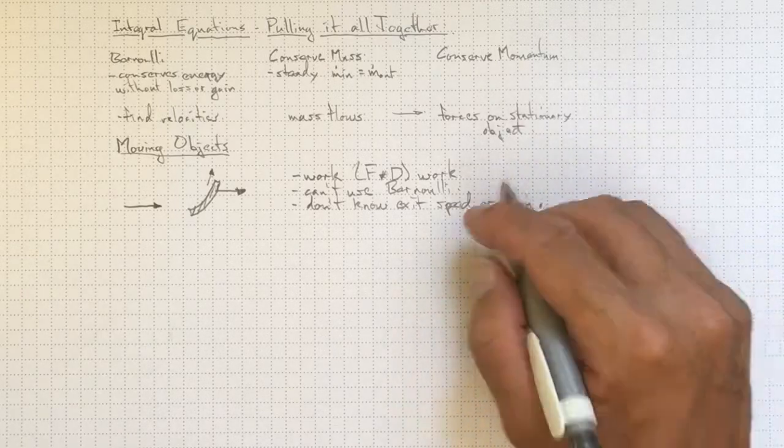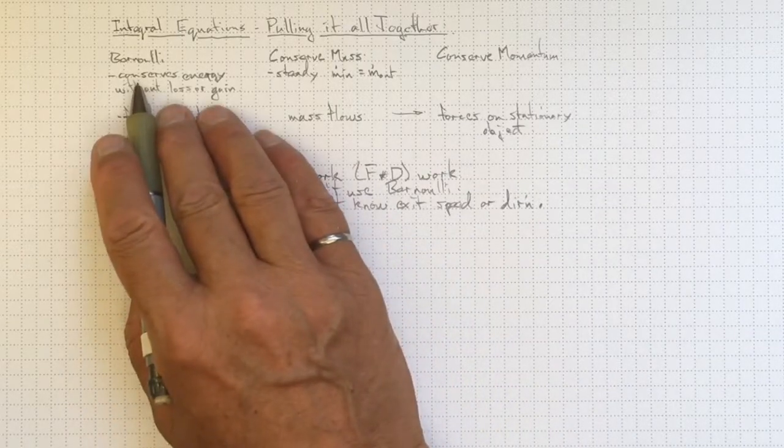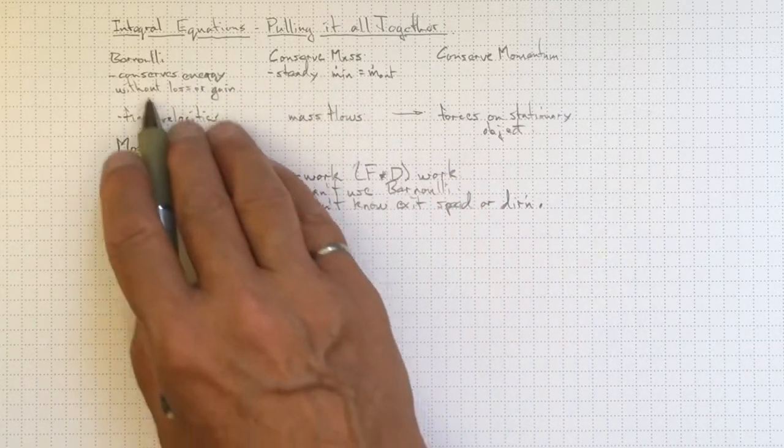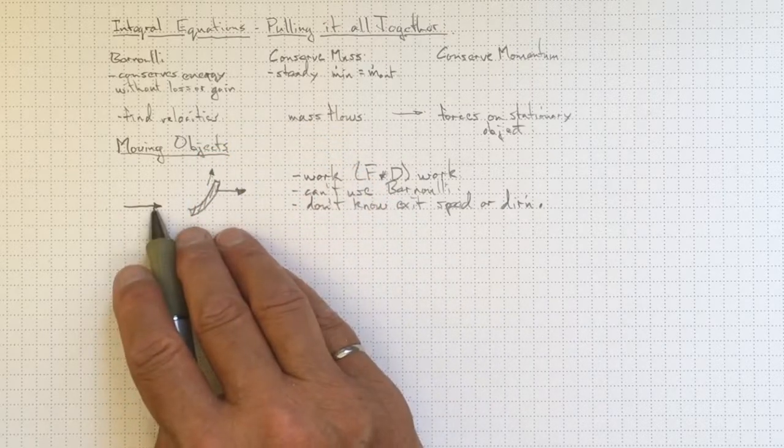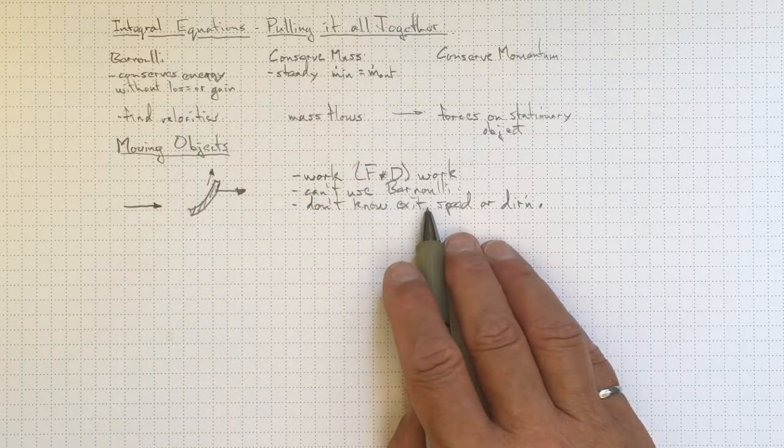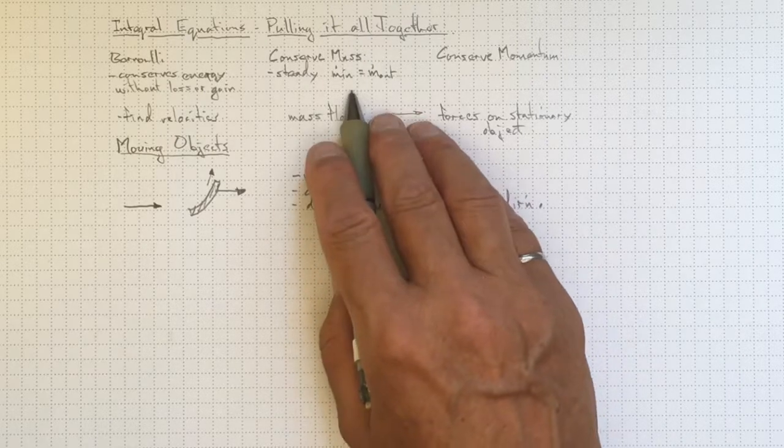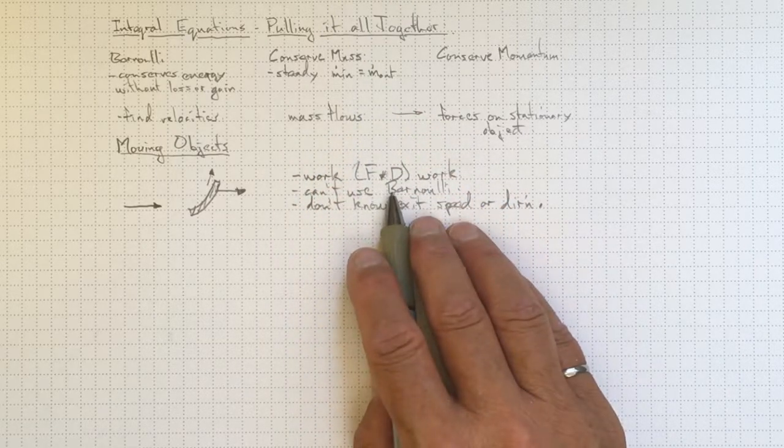So what can we do about that? We've got a system up here that allows us to work with situations where there's no loss or gain in energy. And we've got a system here where there is a loss or gain in energy. Can we use these tools somehow to attack this kind of problem?